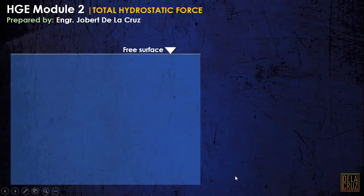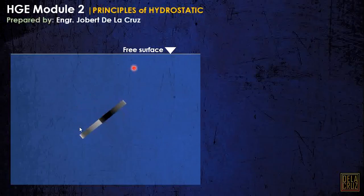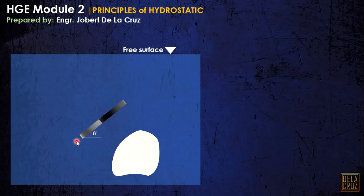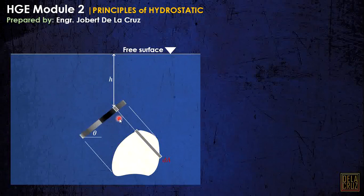Consider we have a liquid with a free surface and a floating body. This is the front view. If we look at it from the side view it will be like this. Projecting the area, this is the projected area, and assuming that this body is inclined at an angle theta with the horizontal. We will consider a differential area projected here, at a variable depth H from the free surface. The distance along the plane to the free surface is Y, also at angle theta with the horizontal. This differential element is called dY.